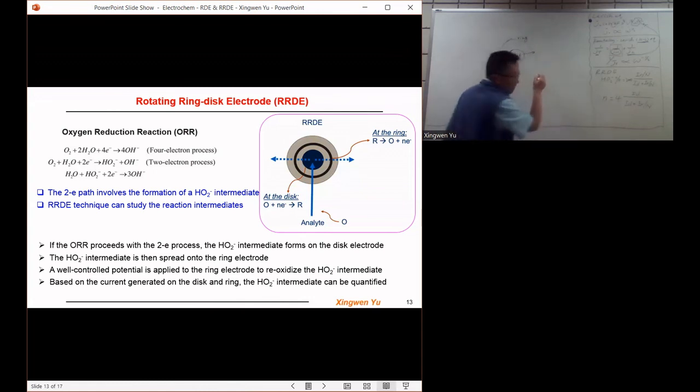In this case, based on the information of the current density generated from the ring electrode j_R and the current density generated from the disk electrode j_D, we can calculate...